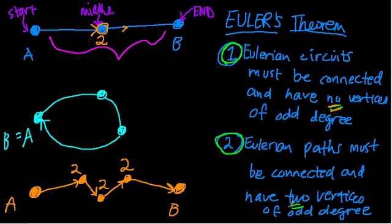And for a path, it's okay to have two vertices, namely the beginning and end, that are odd, but not the middle. The middle has to always be even because of this idea that you're always going in and out of the vertices.